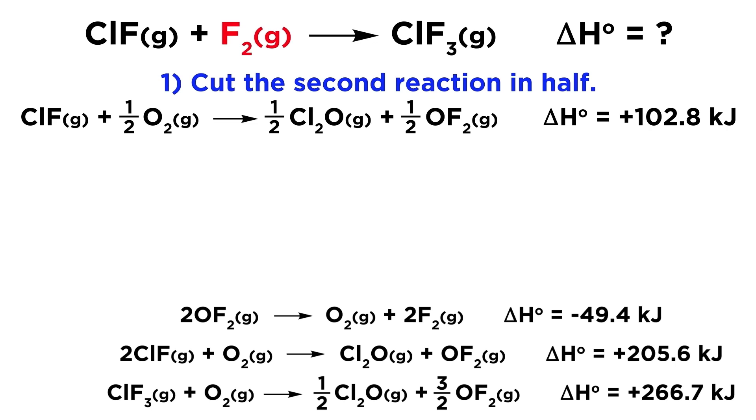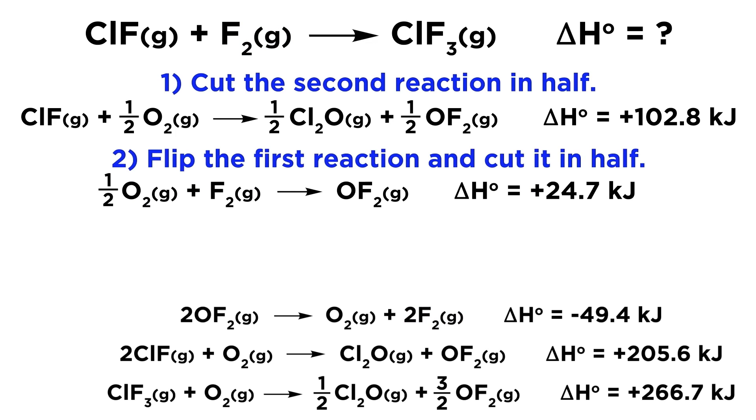Next we have fluorine gas. Where can we find this amongst our given data? Well it shows up in this first reaction, but it shows up as a product, and it has a coefficient of two. This means we have to do two things. We have to flip the reaction so as to make fluorine a reactant, and we also have to cut it in half to get rid of this coefficient. So let's rewrite the equation the way we want it, with coefficients one half, one, and one, and then we do the same to delta H, which will be half the original magnitude, and will also be positive instead of negative, since we flipped it, so we get 24.7 kilojoules.